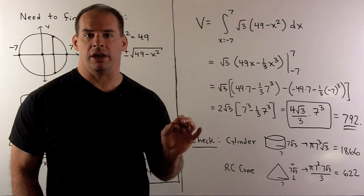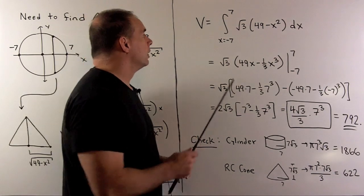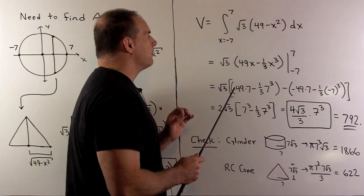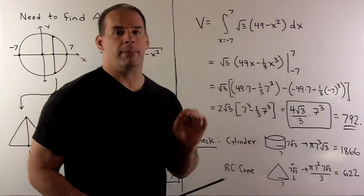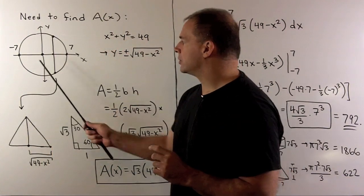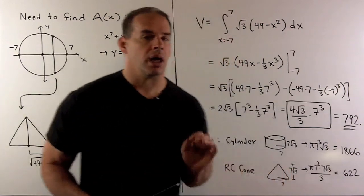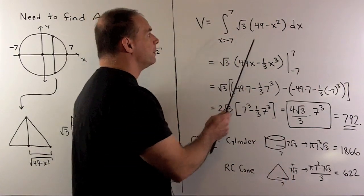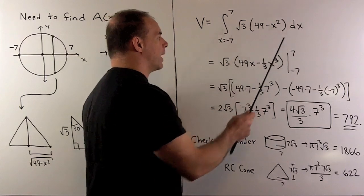Now, we're in a position to integrate. We go to our formula. We'll have the volume is given by a definite integral from minus 7 to 7. That's going to be the range of x that we're interested in, of square root of 3, 49 minus x squared, with respect to x.